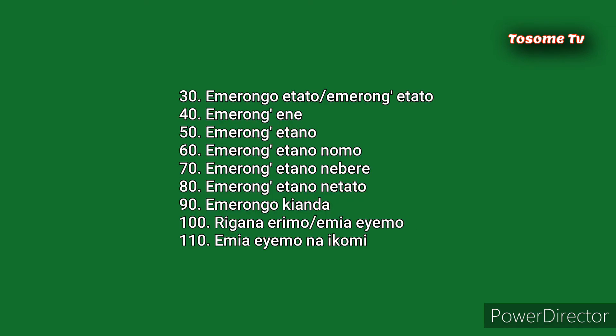So 30 we say EME RONGO ETATO. Remember, 20 words: EME RONGO EBERE — like two tens. Then we talk of EME RONGO ETATO, that is 30. EME RONGO ENE, that is 40. EME RONGO ETANO. EME RONGO ETANO NEMO, that is 60. 70 is EME RONGO ETANO NAIVERE, or EME RONGO ETANO NAISATO. That is 80. Then we have EME RONGO KIANDA — that's 90.